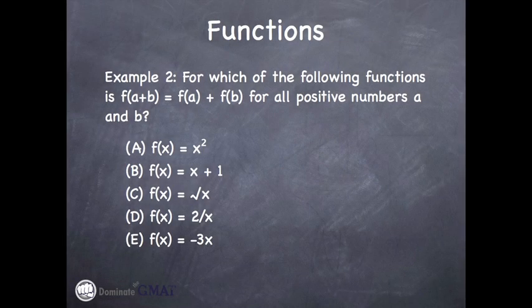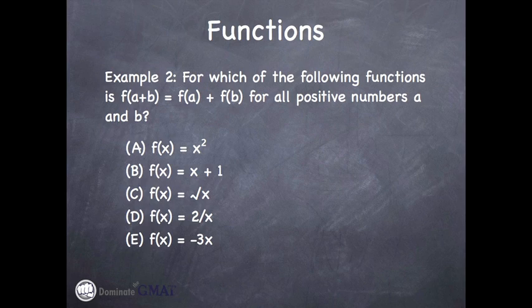So in this example, it says for which of the following functions is f of a plus b — so that's the whole input, a plus b — going to be equal to the individual function a plus the individual function b, for all positive numbers a and b. Now it's got x's in the answer choices. I'll let you try to figure that out, sort it out on your own, see how you do, and then we'll come back and do this together. Go ahead and press pause and see how you do.